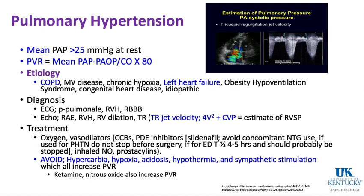Treatment for pulmonary hypertension is oxygen and vasodilators, sometimes calcium channel blockers and phosphodiesterase inhibitors. Sildenafil is a PDE5 inhibitor often used for erectile dysfunction but can be used for pulmonary hypertension. It is recommended to avoid concomitant nitroglycerin use with sildenafil because of the potential for severe hypotension. If someone is on sildenafil for pulmonary hypertension management before surgery, don't stop it — it should be continued. It has a half-life of about four to five hours.